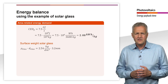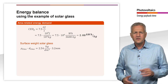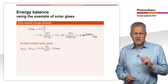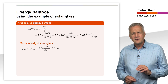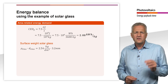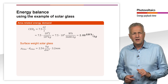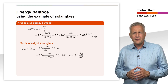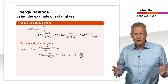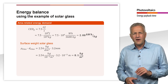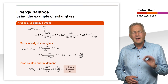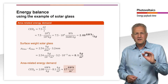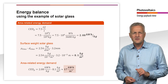To convert this mass-based energy into an area-based energy, we need the density and thickness of the solar glass. The density of solar glass is 2.54 tonnes per cubic meter. The thickness of the glass in glass-foil solar modules is about 3.2 mm. By multiplying the density and thickness, we get the weight per area, which is 8.1 kg per square meter. With this value, we can finally calculate the area-related cumulative energy consumption. We get 17 kWh per square meter as a result.